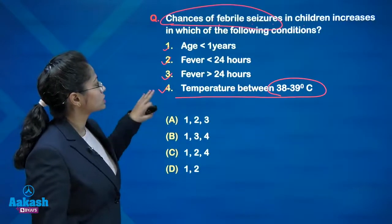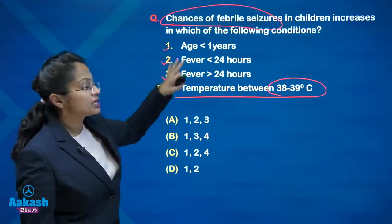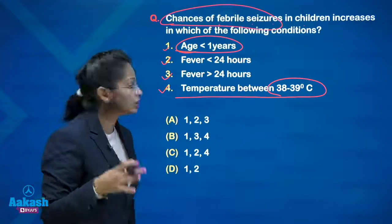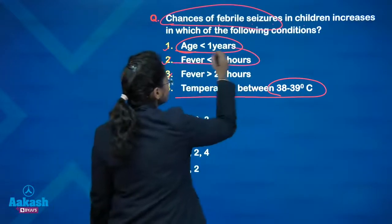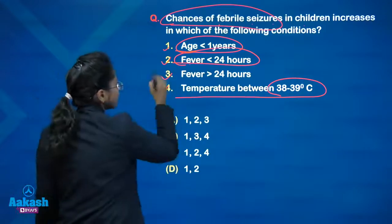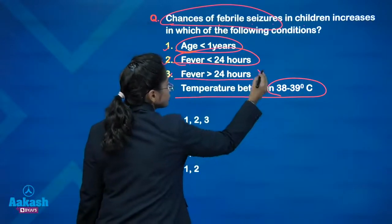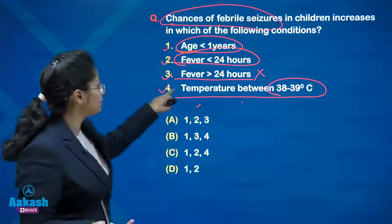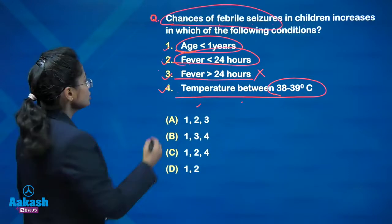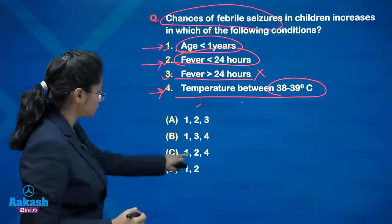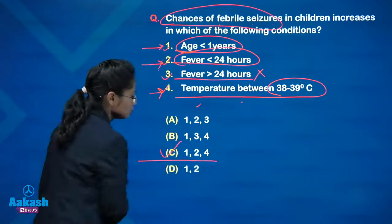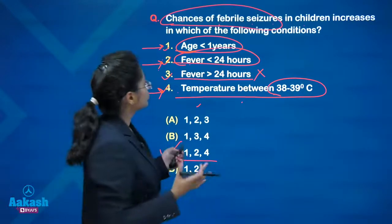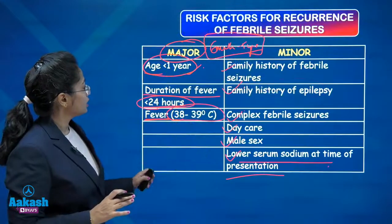So from the options: age less than 1 year — yes; fever of less than 24 hours duration — yes; fever of more than 24 hours — wrong; and temperature between 38 to 39 degrees Celsius — yes, this is a major risk factor. So options 1, 2, and 4 are correct. Answer is C. A very direct question with no clinical history — just a direct question and the answer is C.